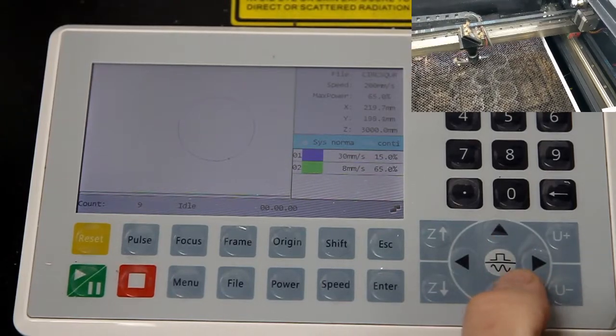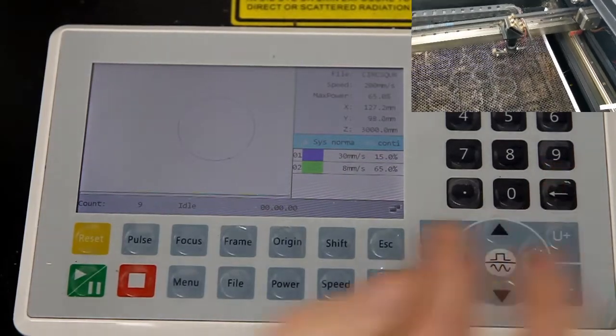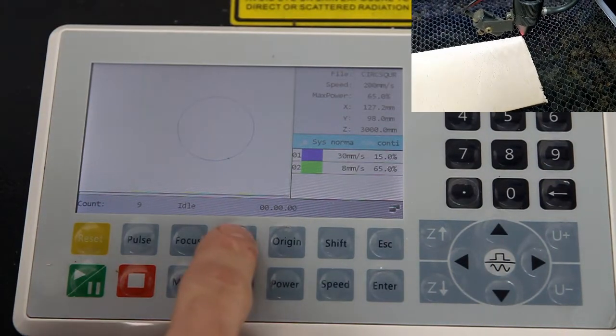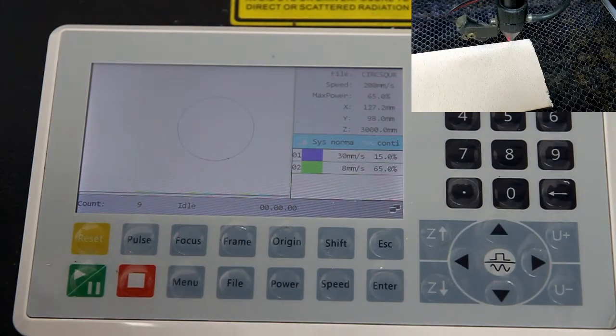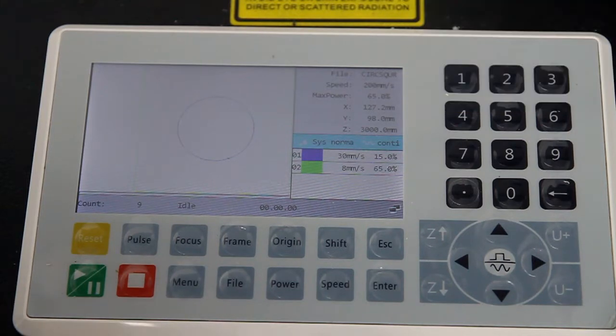While you're in this mode, pressing the arrow keys will position the laser, move the laser head and allow you to position it over your work. To assist with judging the position, pressing frame will cause the laser head to move around the rectangular extremes of the job.